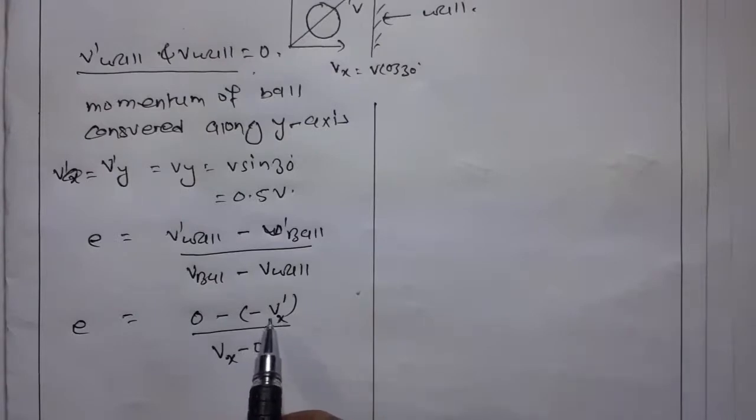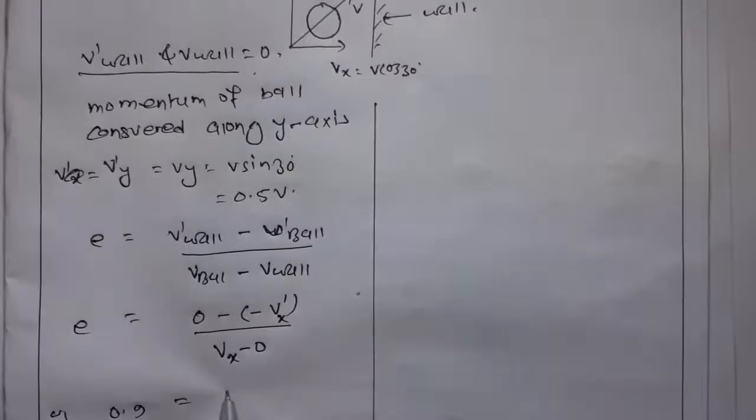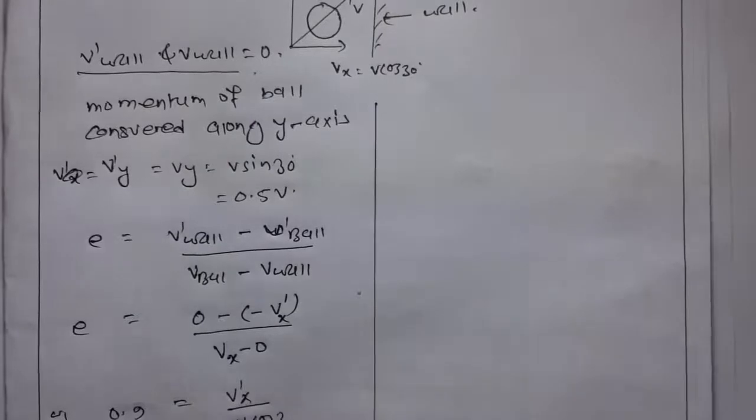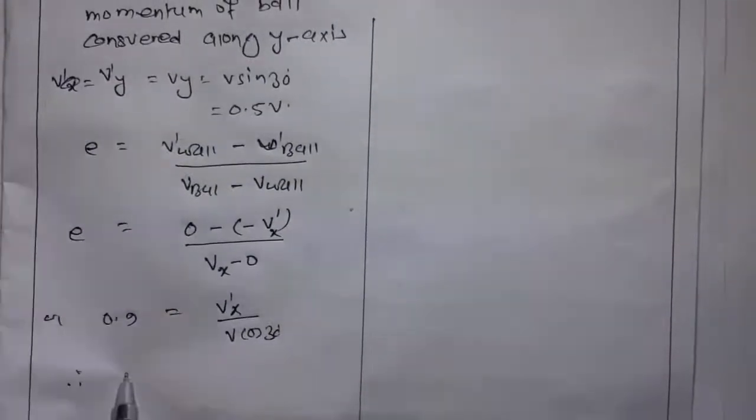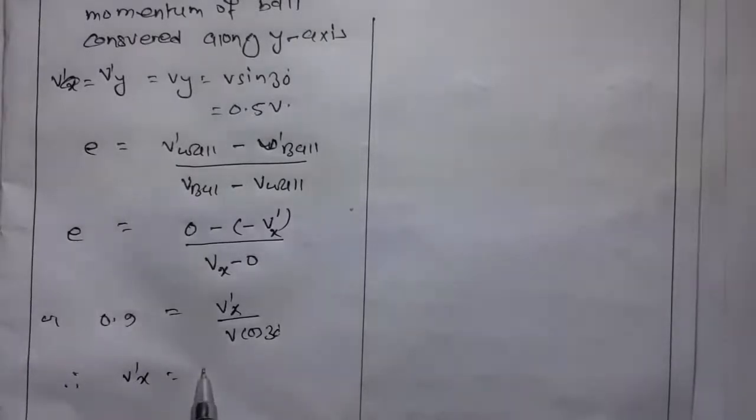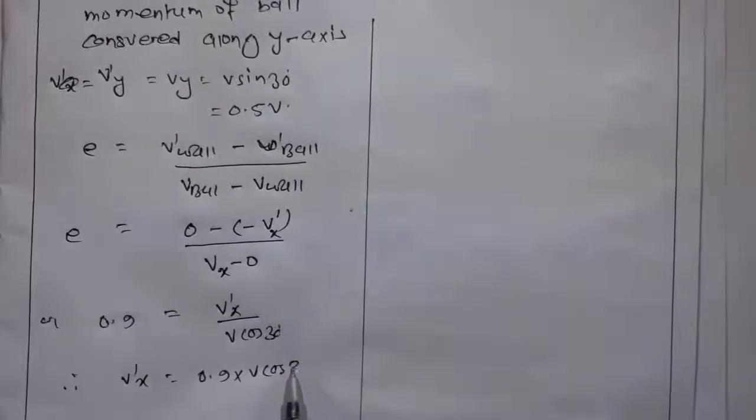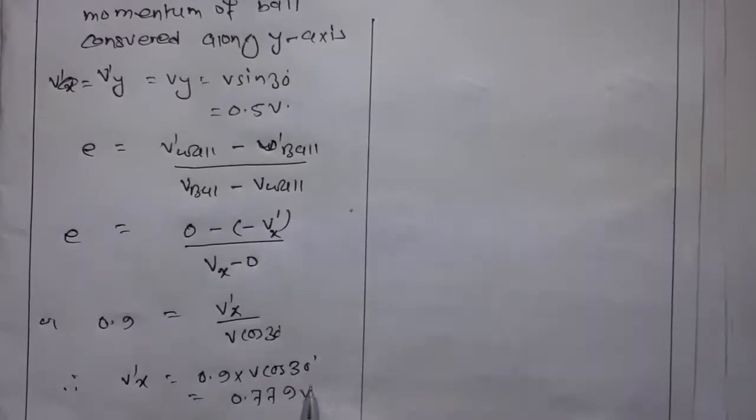Coefficient of restitution e is 0 minus negative v dash x upon v x. Negative v dash x because there is a rebound of the ball. E is 0.9 equals v dash x upon v x, which is v cosine 30 degrees. Therefore v dash x is 0.9 times v cosine 30 degrees, which is 0.779 v.